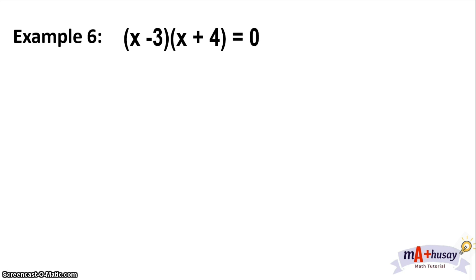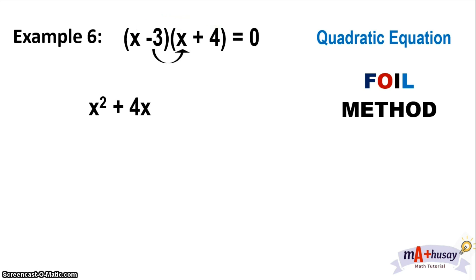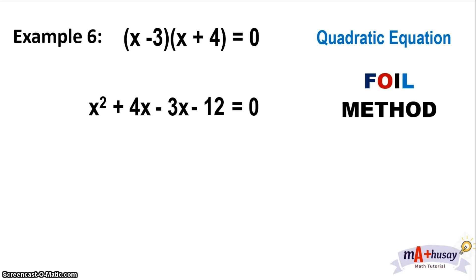Example number six: the quantity of x minus 3 times x plus 4 equals 0. This is still a quadratic equation but not in standard form, so we use the FOIL method — First, Outer, Inner, Last. x times x is x squared (first); x times 4 is 4x (outer); negative 3 times x is negative 3x (inner); and negative 3 times positive 4 is negative 12 (last). This equals 0.